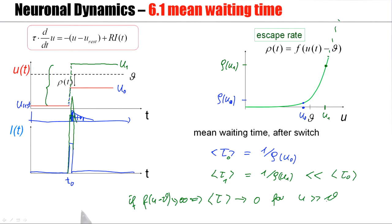This means that, as it should be, if I'm way above threshold, if I push the membrane potential up above threshold, then spike firing is reliable and it occurs immediately after the threshold crossing.